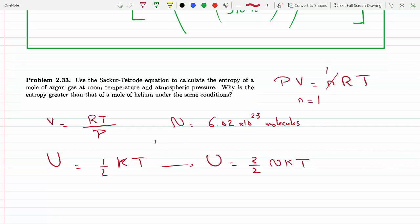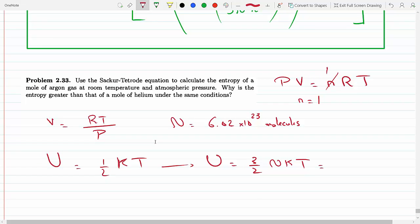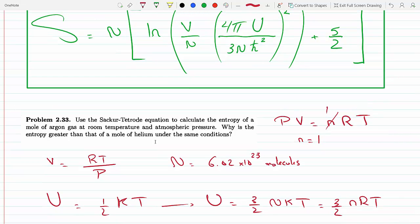We know that n kT is the same thing as small n RT, so I could use that just so I can put it in the same units as V. It makes the algebra a little bit easier.